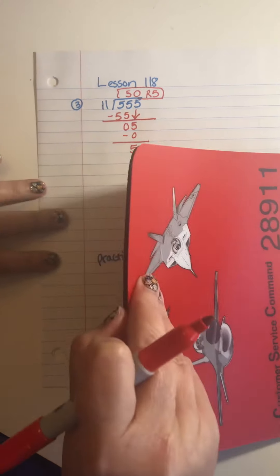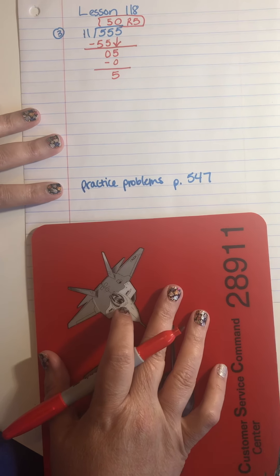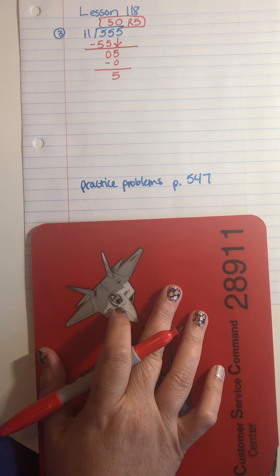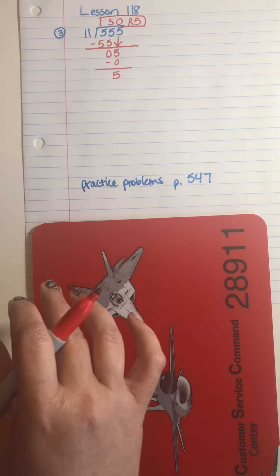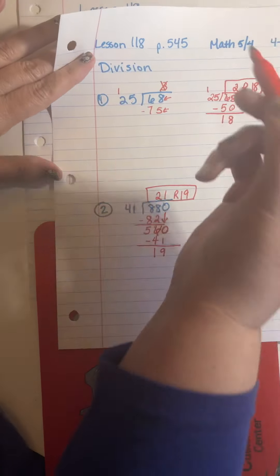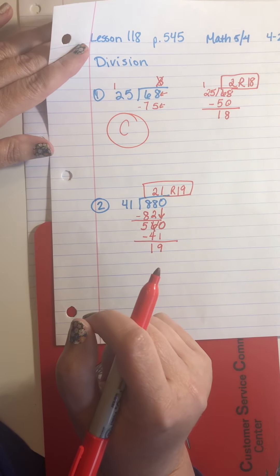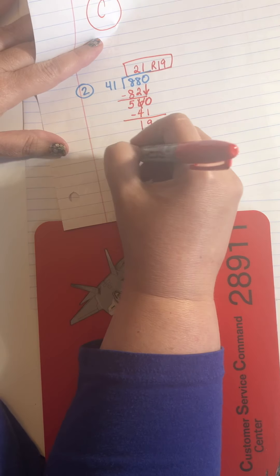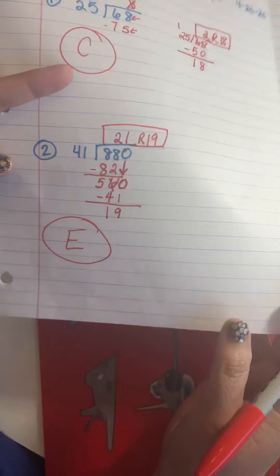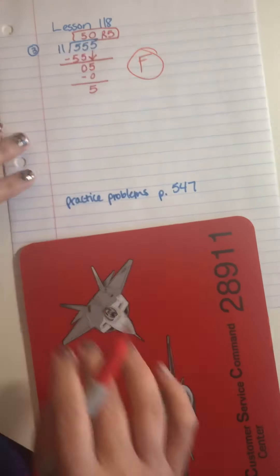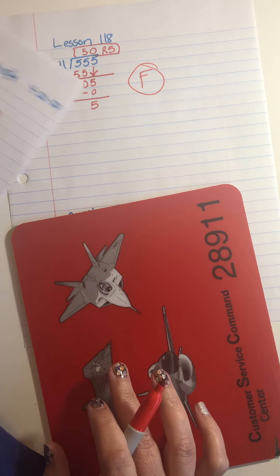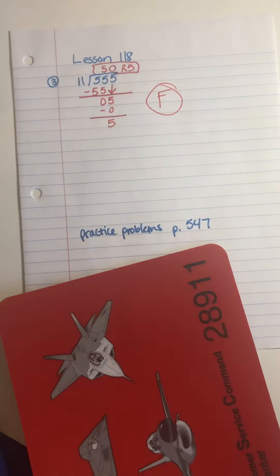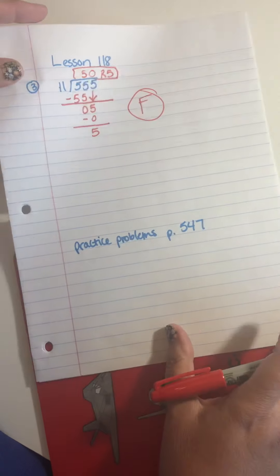So your practice problems for this lesson are on page 547. And as a bonus for paying attention to the video, I'll tell you that if you worked this one with me, there's your practice problem C. If you worked this one with me, there's your practice problem E. And I have one more. If you worked this problem with me, there's your practice problem F. So that means you only have three practice problems you'd have to do on your own. So again, the practice problems are located on page 547. Bye guys.